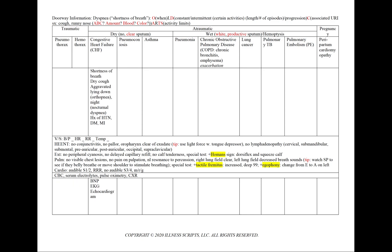We'll further divide our atraumatic causes into a dry and wet cough — dry being no or clear sputum, and a wet cough having white or productive sputum or with hemoptysis. In congestive heart failure, we can see shortness of breath with a dry cough, and it can be aggravated by lying down, or orthopnea, or at night — nocturnal dyspnea — and our patient can have a history of hypertension, diabetes, or an MI.